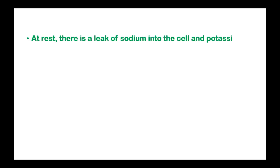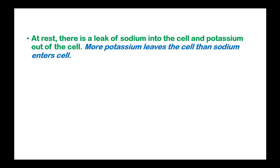At rest, there is a leak of sodium into the cell and potassium out of the cell. More potassium leaves the cell than sodium enters the cell. This is one of the reasons why the inside of the nerve is negative at negative 70 millivolts.